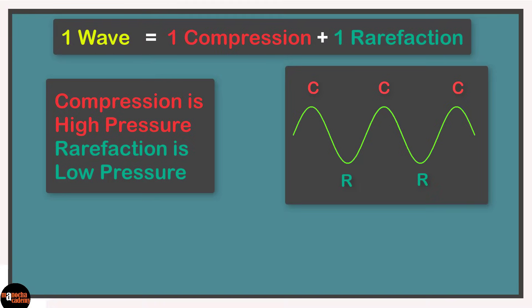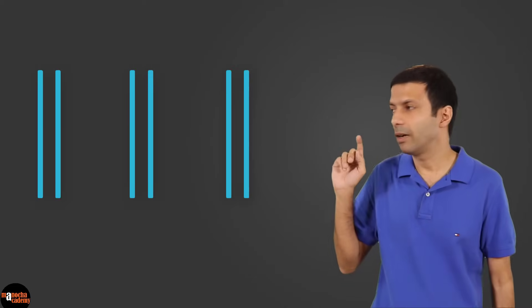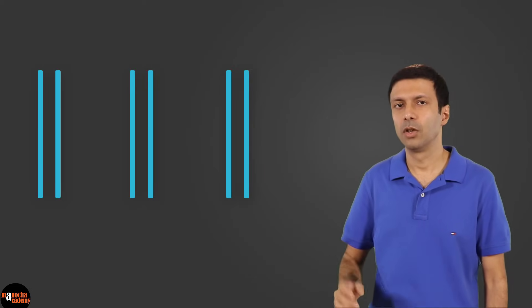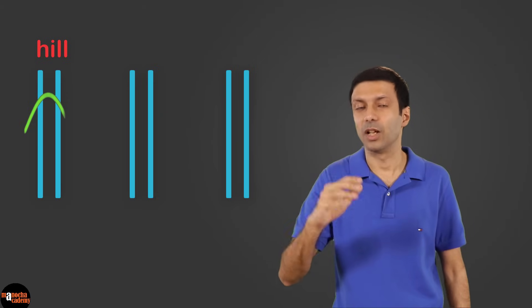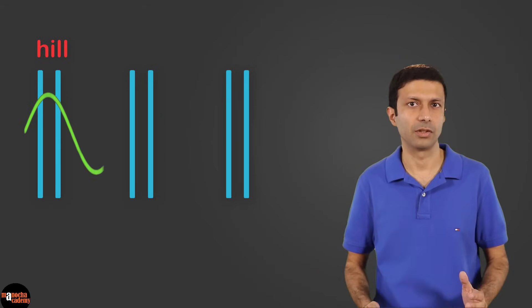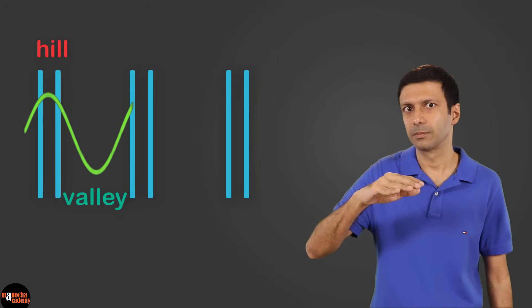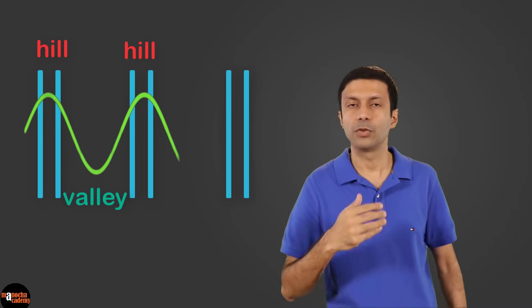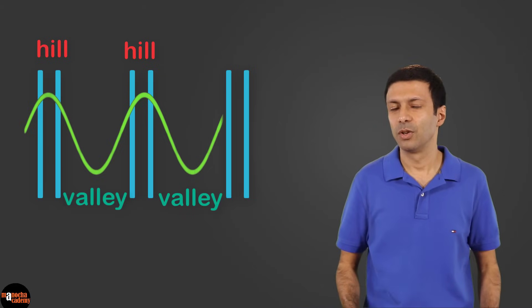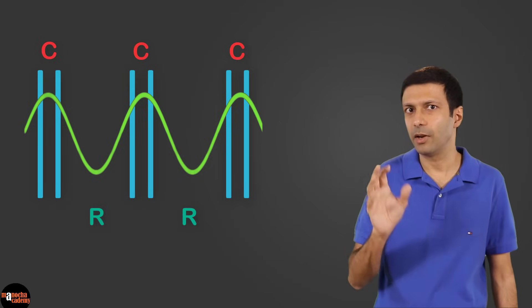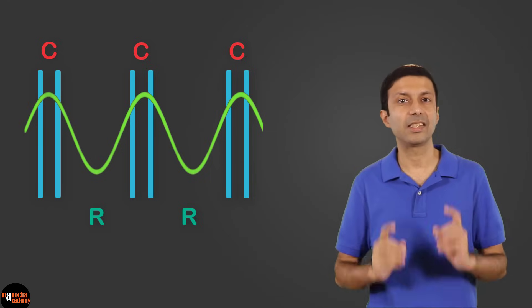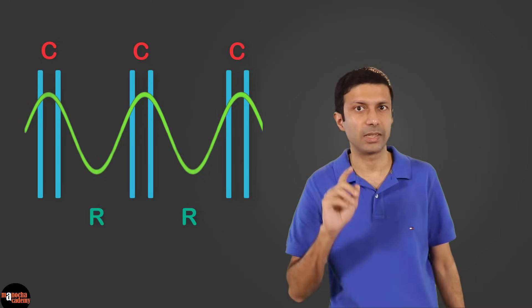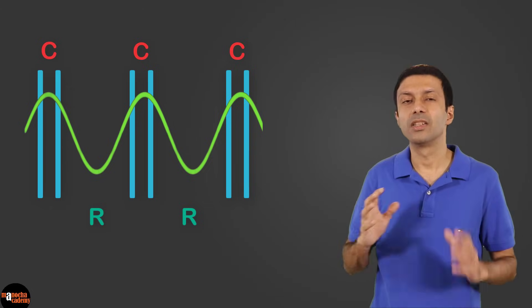The hill represents a region of high pressure — that's the compression — and the valley represents a region of low pressure — that's the rarefaction. Let's pin the definitions of wave, compression, and rarefaction on our concept board. Now let's depict this wave-like diagram on our layers of air: the first two layers form a compression — that's our hill — and the next two layers form the rarefaction — that's our valley. That's the connection between the wave diagram in your textbooks and the layers of air through which sound is traveling.